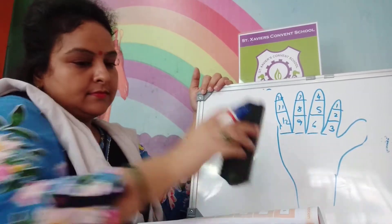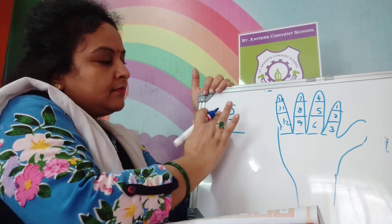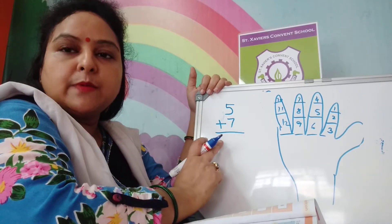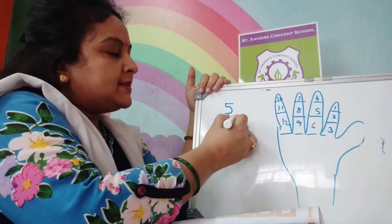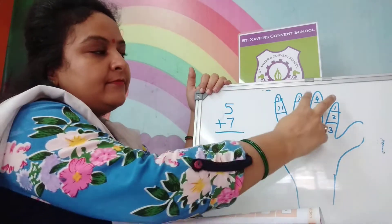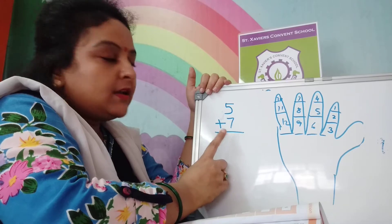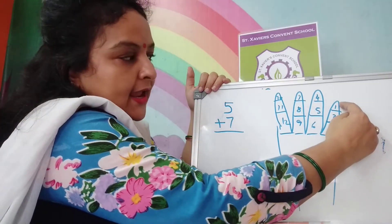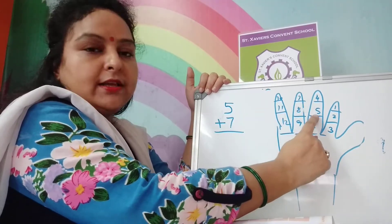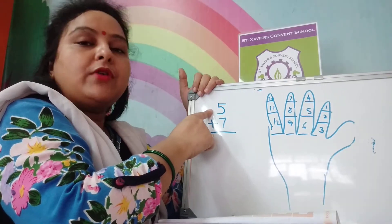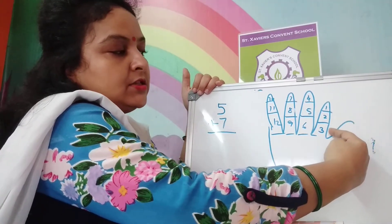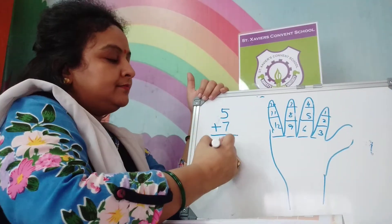The other addition: 5 plus 7. Which number is bigger? The number 7 is bigger. So you will keep number 7 in your mind and count after 7 up to 5 steps. After 7 comes 8, so: 8, 9, 10, 11, 12. You have to count up to 5. So the answer will be 12.